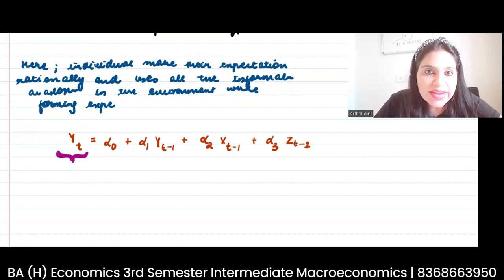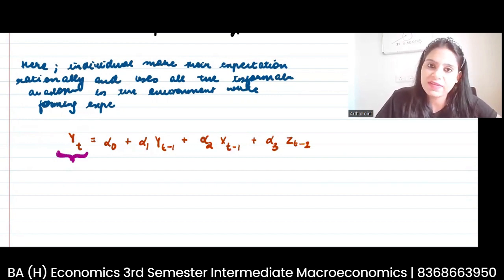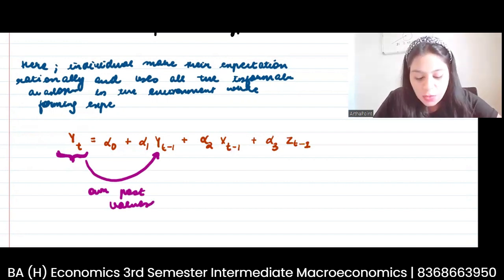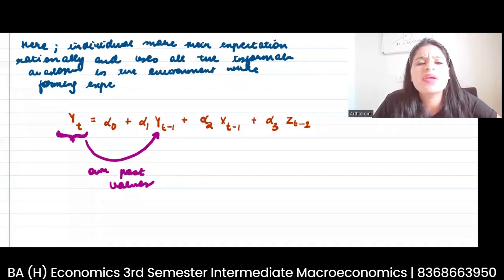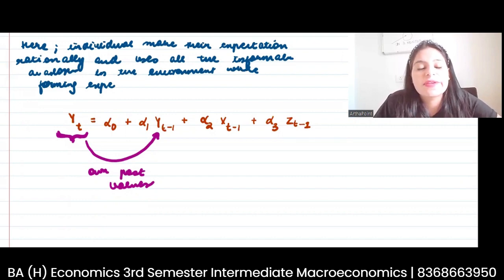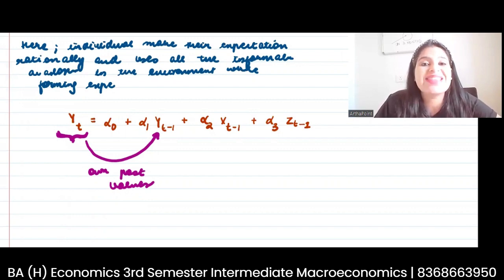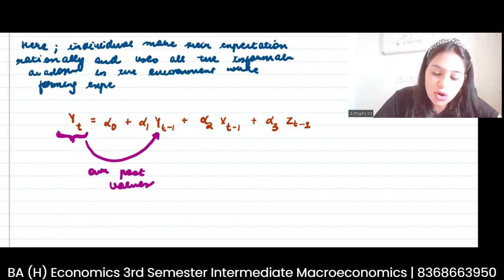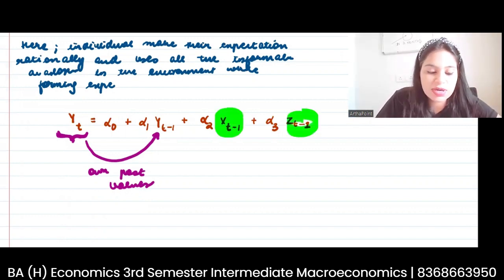This yt is affected by its own lagged values — its own past values. But yt is also affected by some environmental variables. Let's say yt is the inflation, and inflation is affected by monetary policies and by the foreign exchange rate. So we are saying it not only depends on its lagged values, but this year's yt will also depend on what has happened in the past related to monetary policy, exchange rate, and other environmental variables.